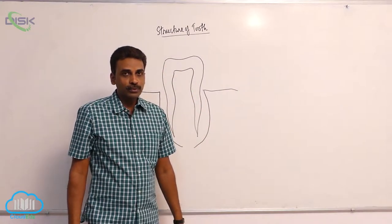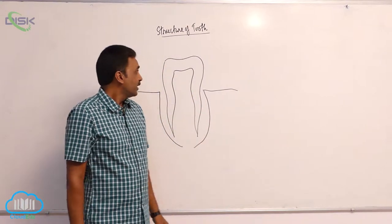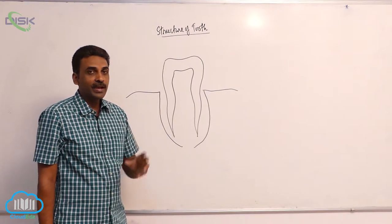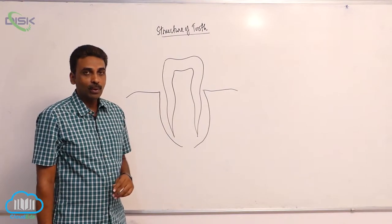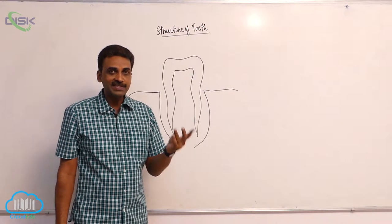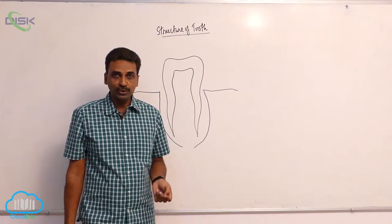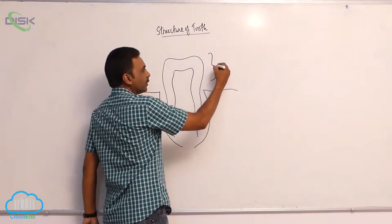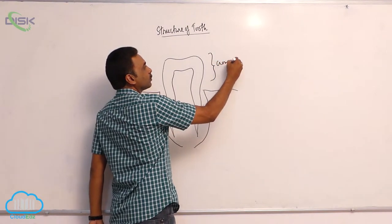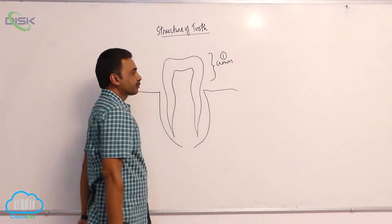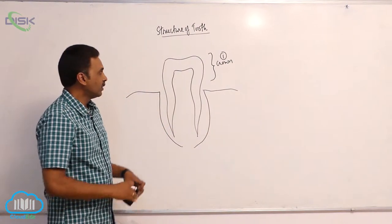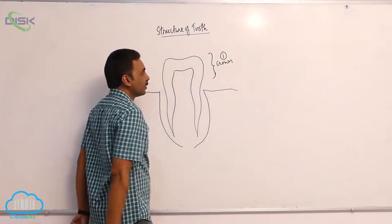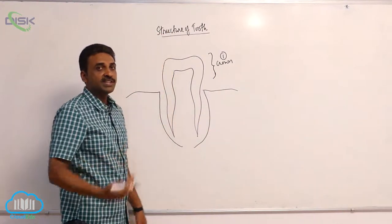Let us see the structure of a tooth. When we see the structure of a tooth, we have three basic parts. One is the crown, second is the neck, and third is the root. The area which is exposed outside is called the crown.